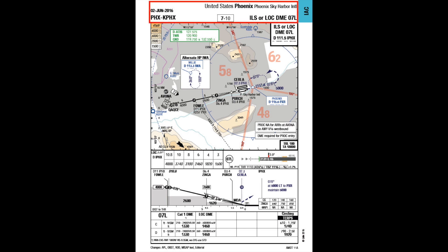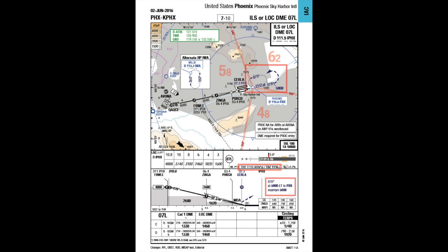First, the airport and procedure identification. Then the procedure designator with components and frequencies required for final approach — this is the navigation setup. Next, ATIS and required ATC frequencies for final approach — communication setup. Then the final approach track, aerodrome elevation, runway landing distance available, approach light system with classification, threshold elevation, missed approach description, and finally final approach profile and minima related remarks.